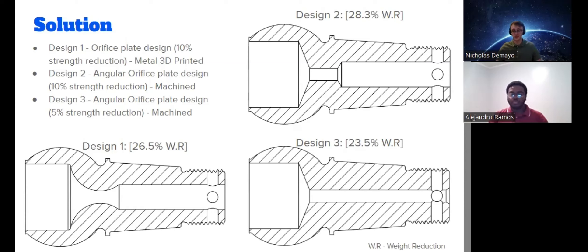Design 1 is intended to be 3D printed using metal, and design 2 is meant to be traditionally machined. Design 3 reduces the strength by 5% while reducing the weight by 23.5% and is also machined.